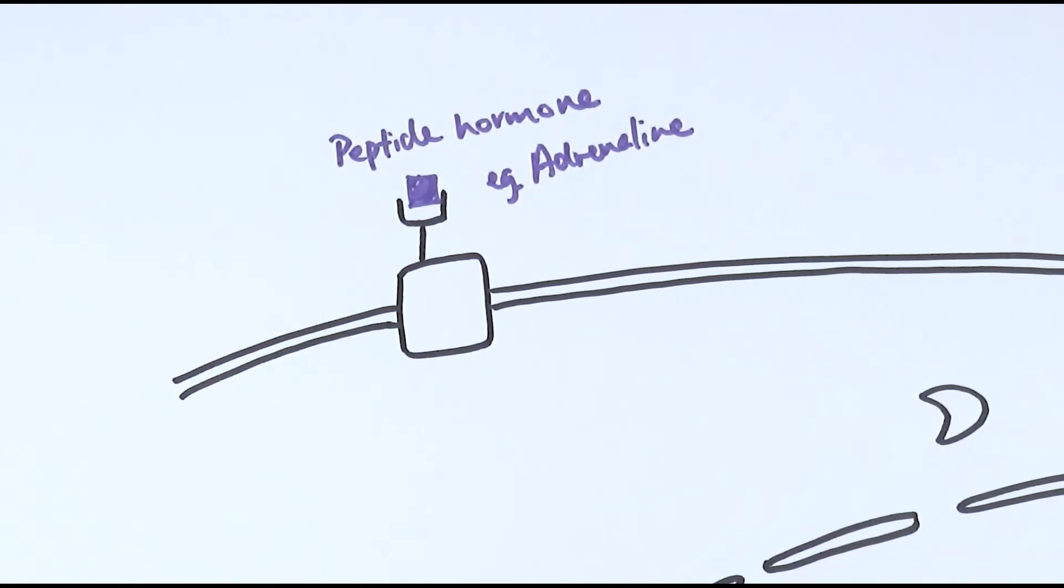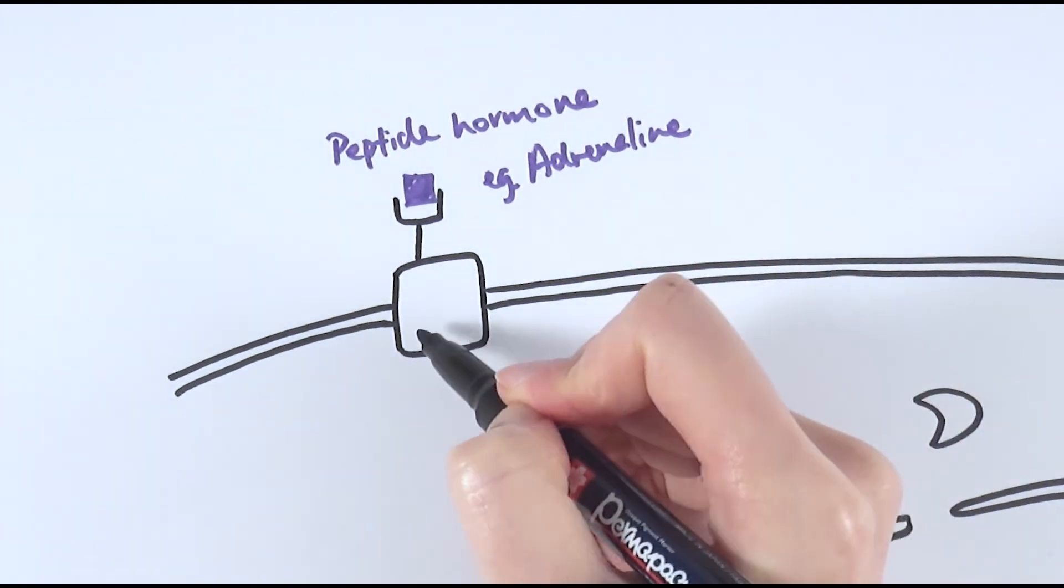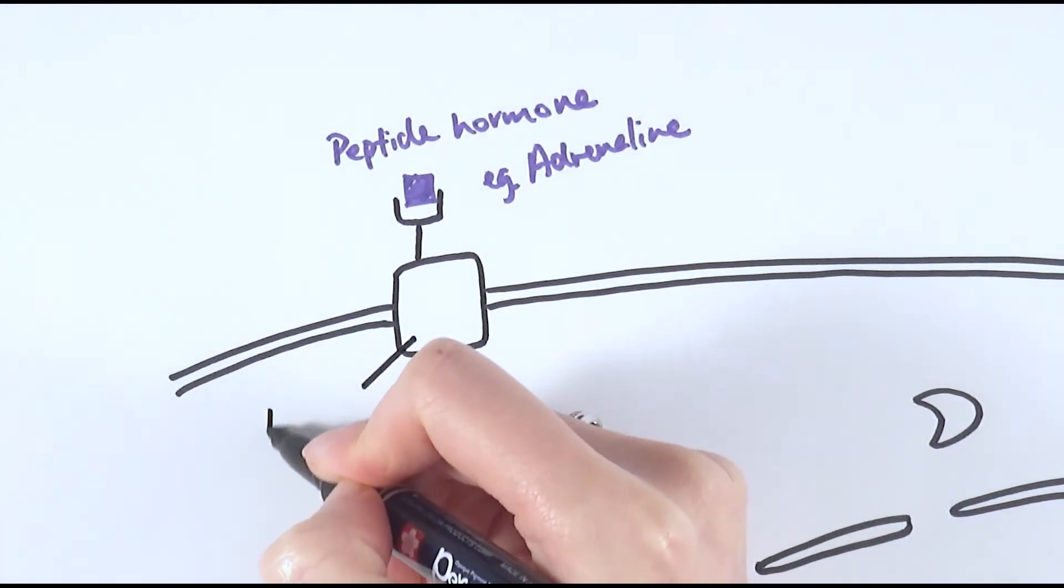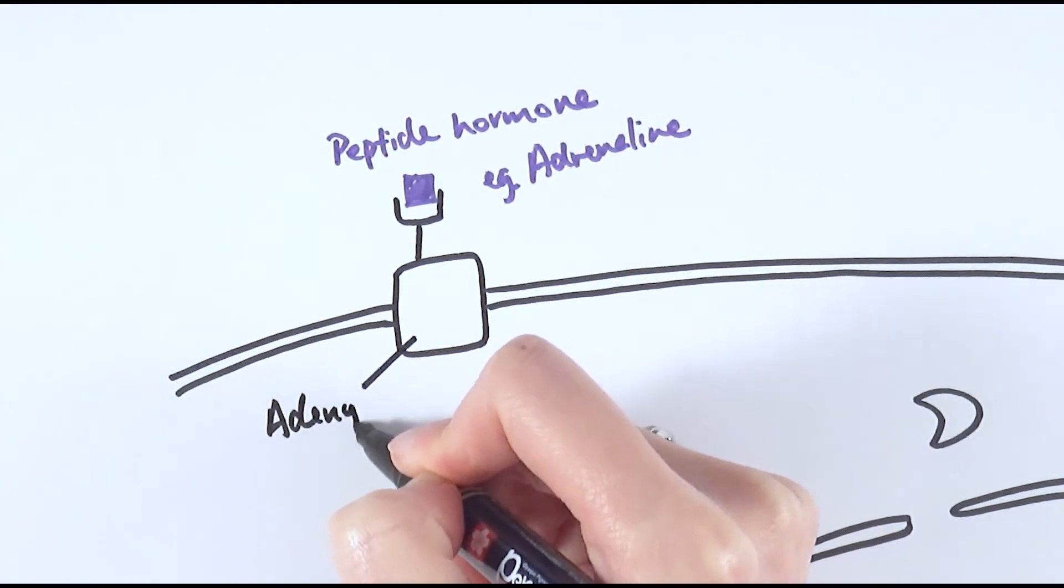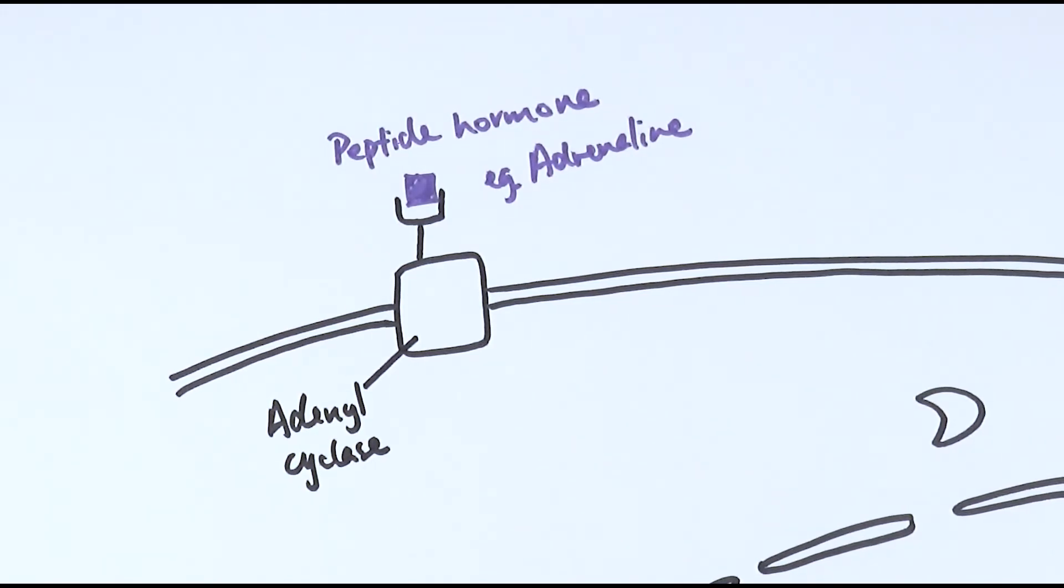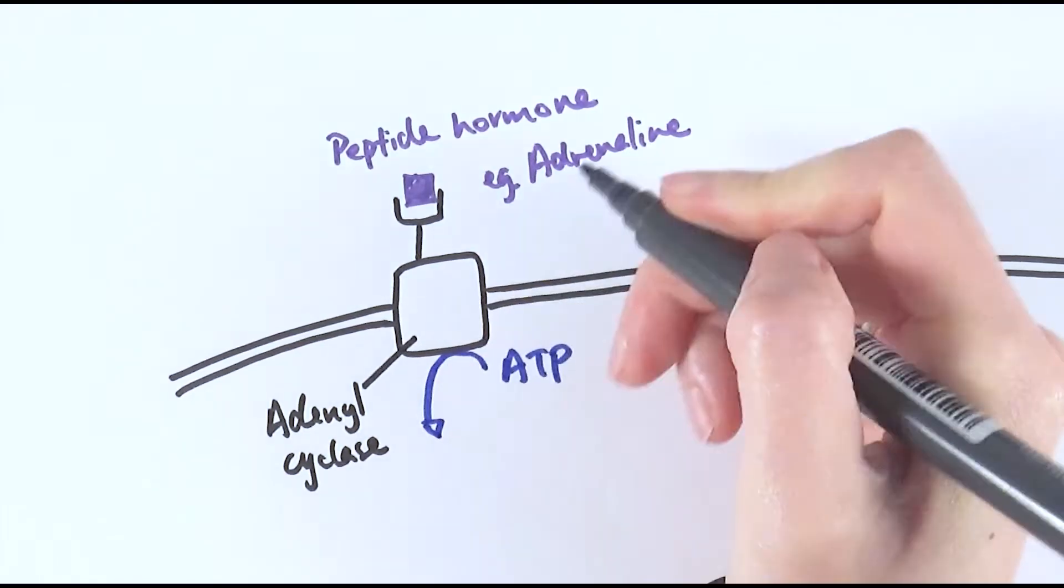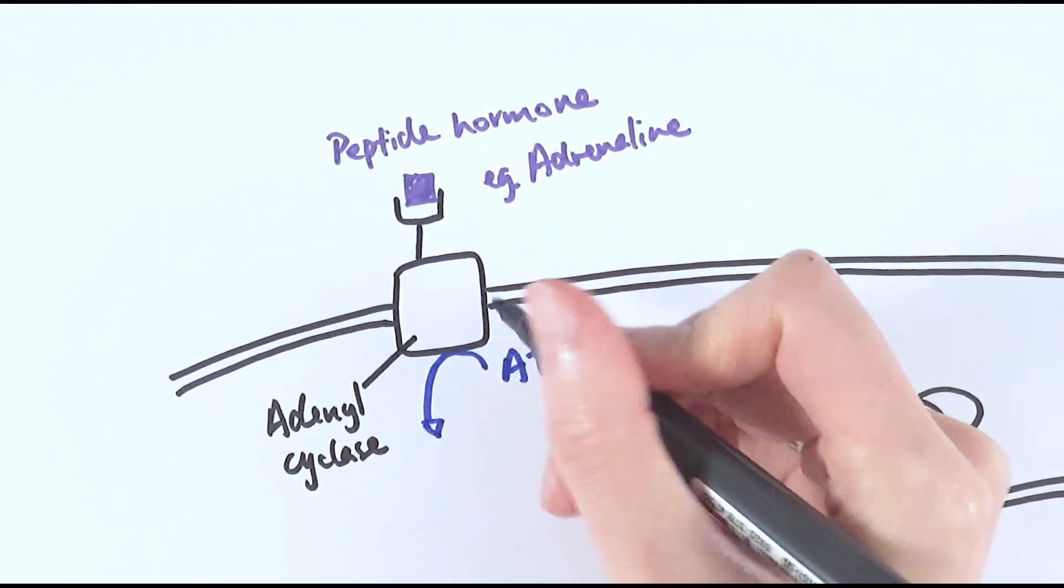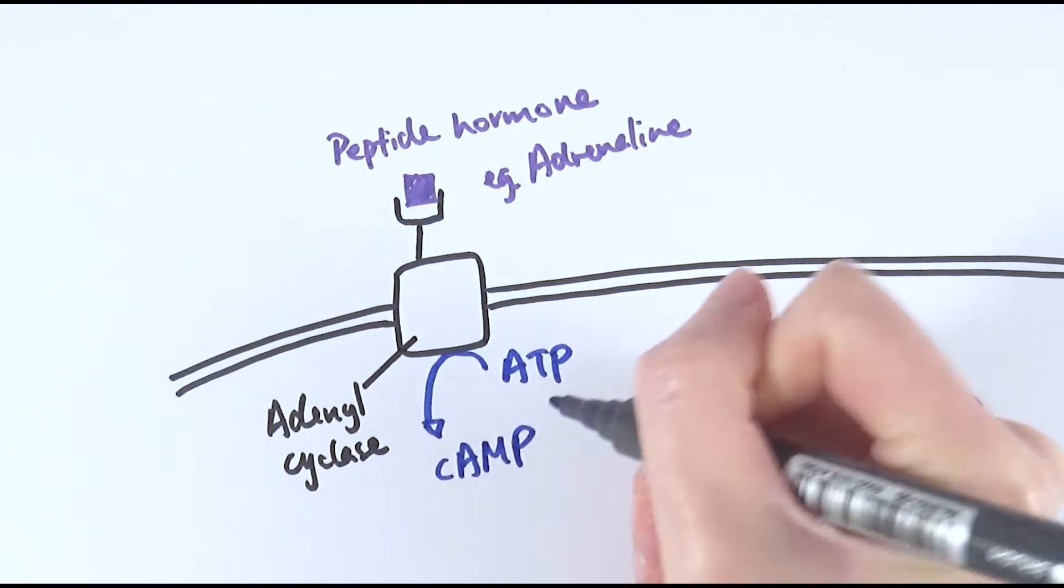What happens is in the case of adrenaline, this protein is actually an enzyme called adenyl cyclase. Adenyl cyclase is actually an enzyme and it can convert some signals. It can change ATP into cyclic AMP.